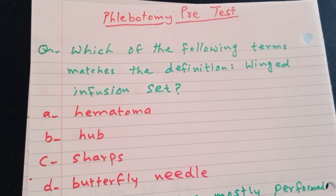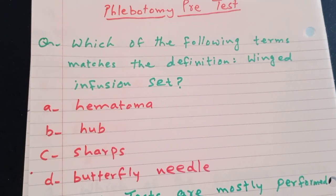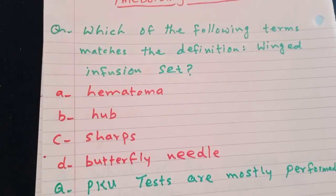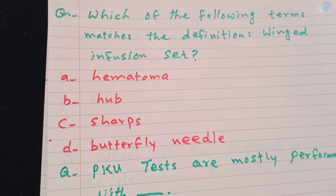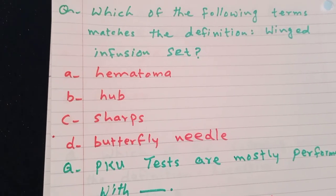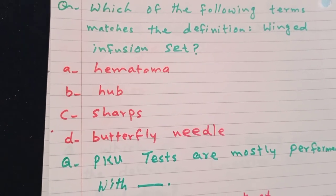Which of the following terms matches the definition winged infusion set? Hematoma, hub, sharps, butterfly, butterfly needle. The answer is D, butterfly needle.